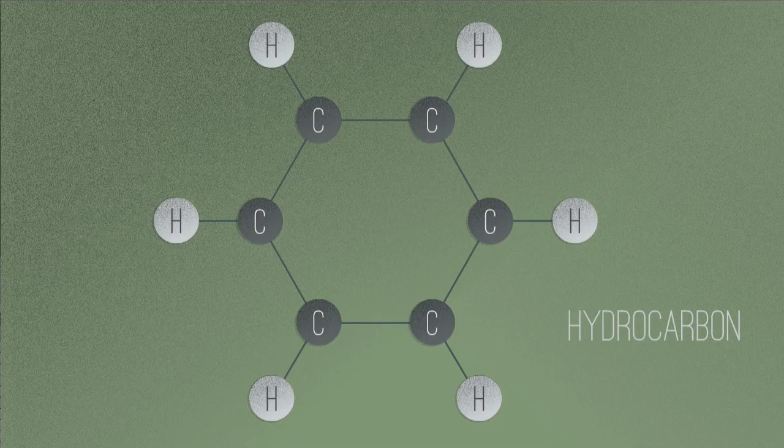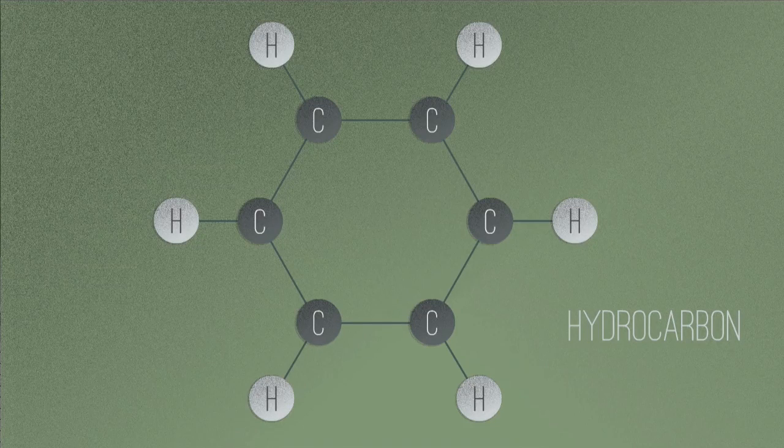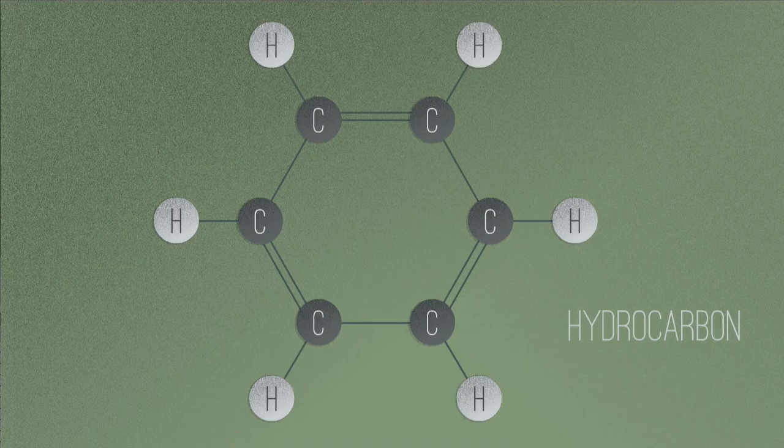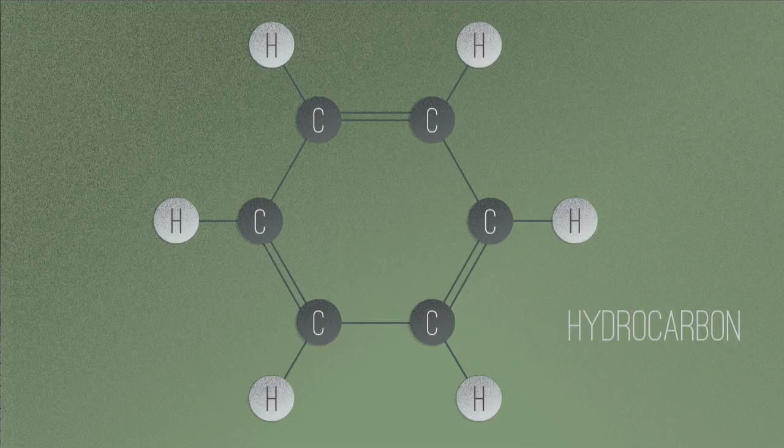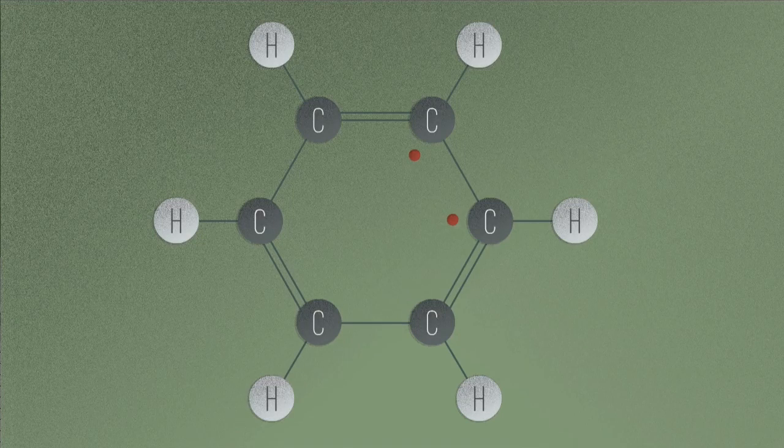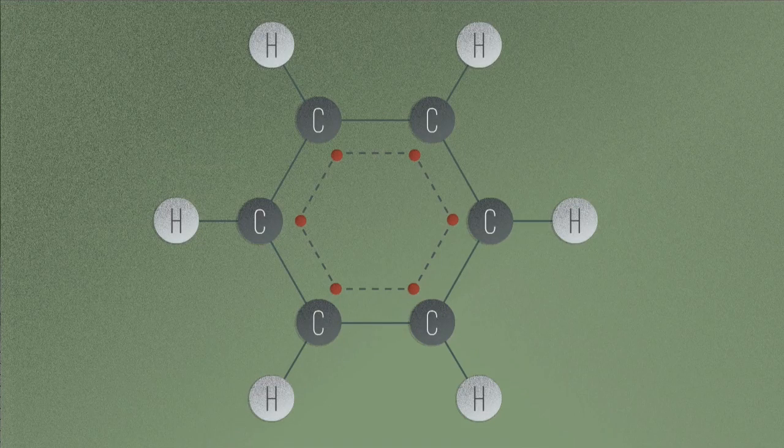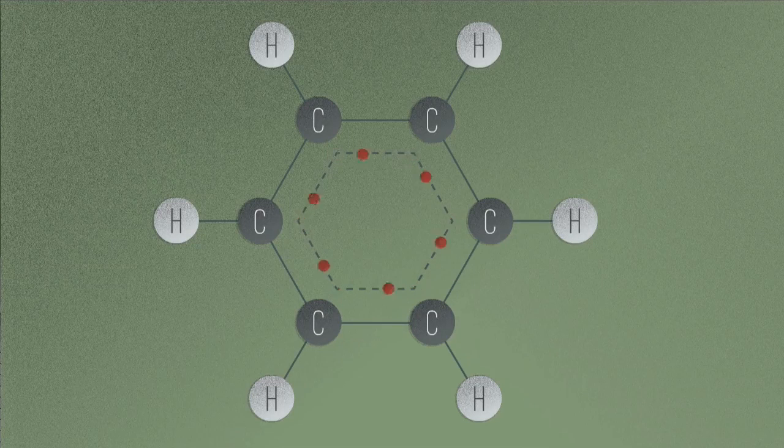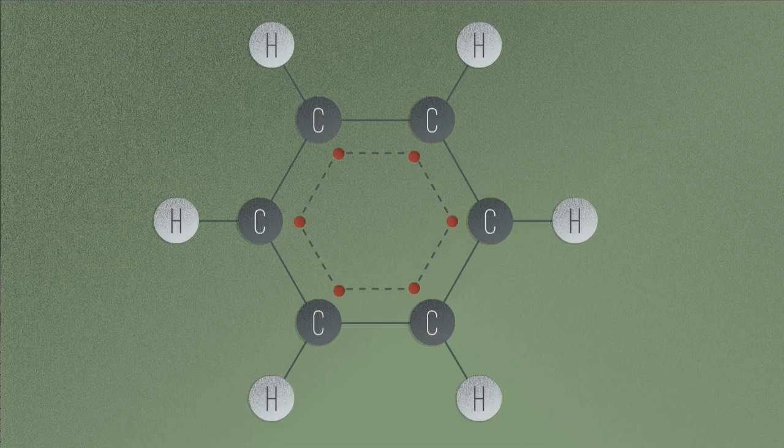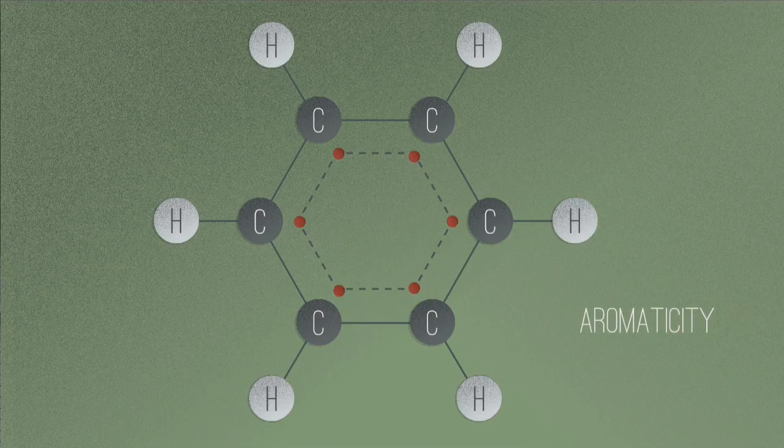Carbon usually forms four single covalent bonds and these carbons at the moment only have three. The molecule now does something very special. The one unpaired electron from each carbon becomes conjugated into the ring. This means they have free movement around all six carbons and this gives benzene the property of aromaticity.